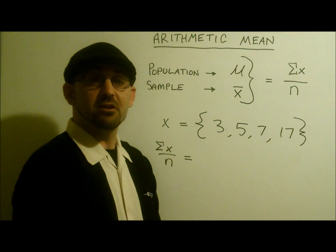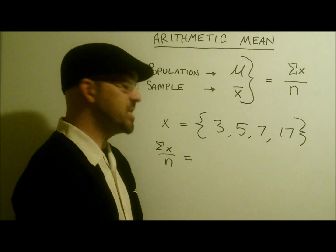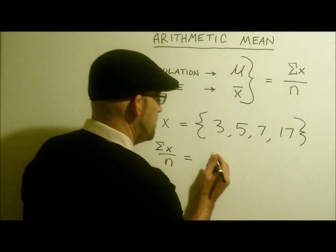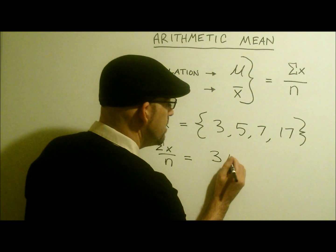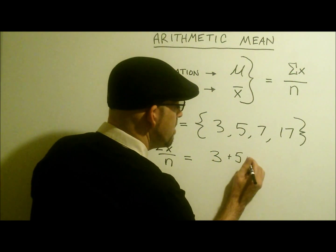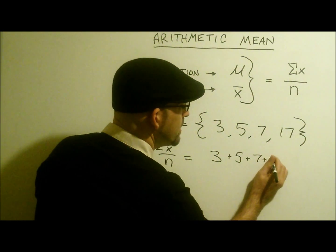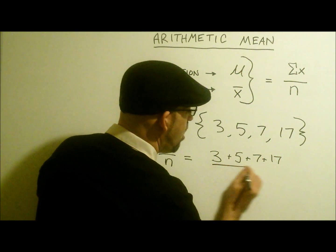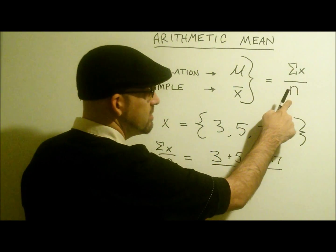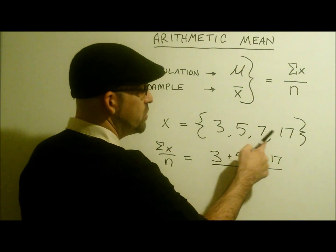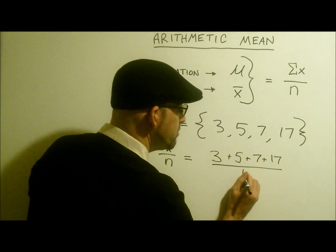The Greek letter sigma only means a summation of all the x's. 3 plus 5 plus 7 plus 17, all divided by our sample size which is 1, 2, 3, 4. n equals 4.